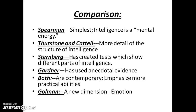Comparing the theories: Spearman had the simplest view, saying intelligence was a form of mental energy. Thurston and Cattell provided more detail of the structure itself. Sternberg and Gardner are contemporary and still supported today — both emphasize more practical abilities than we had seen before. And finally, Goleman added a new dimension that hadn't really been mentioned as much: emotional intelligence.